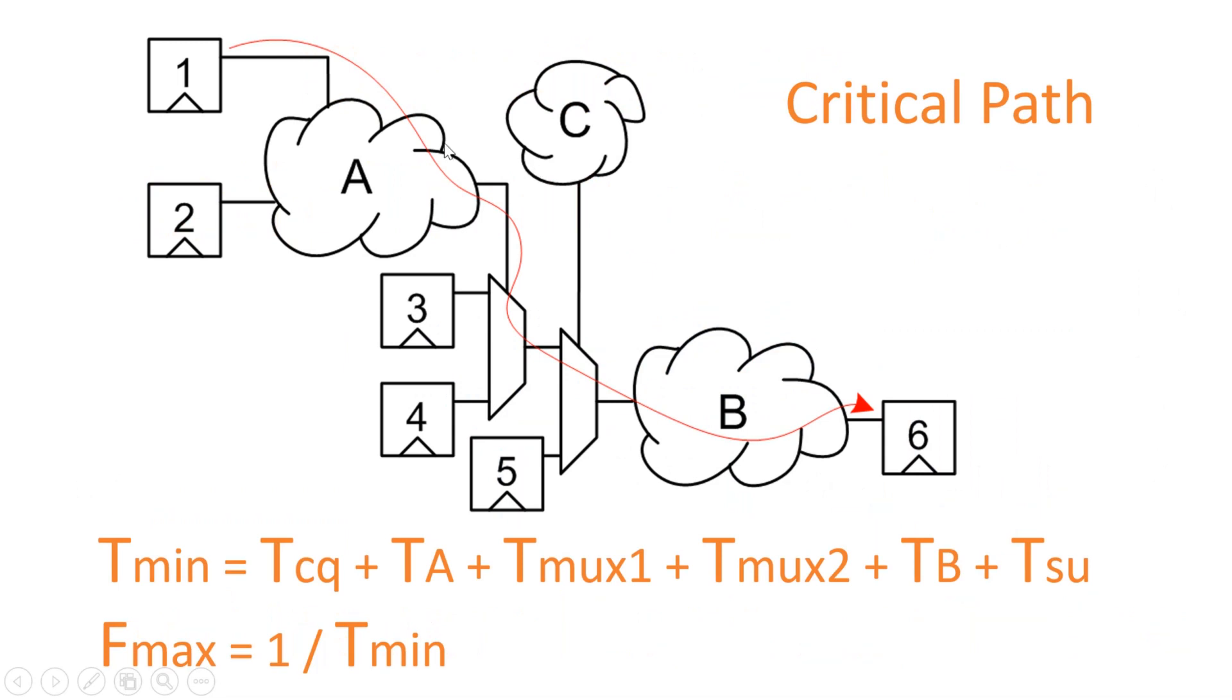Friends, I have taken this question from one of the renowned websites and in this digital design this path has been identified as a critical path. So if we try to calculate its T minimum, that means the minimum time period of operation, it will be equal to Tcq of flip-flop 1 plus combinational logic delay of this logic A.